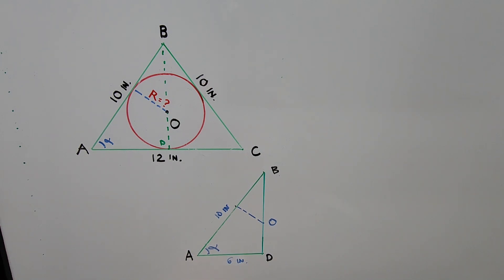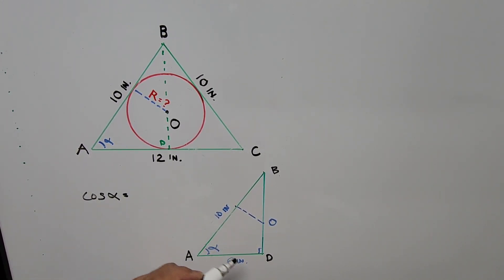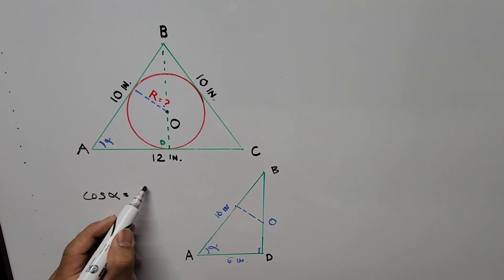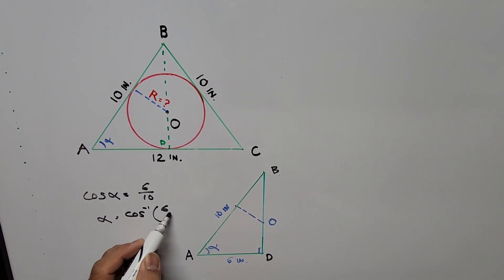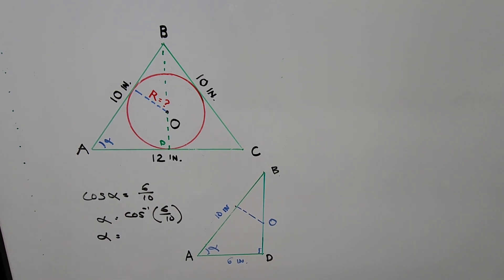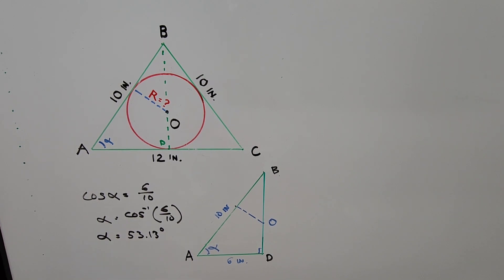Now we're going to find the value of angle alpha using the trigonometric function. Cosine of angle alpha is equal to the base divided by the hypotenuse, so that's 6 divided by 10. Angle alpha is equal to arc cosine of 6 divided by 10, so alpha equals 53.13 degrees.